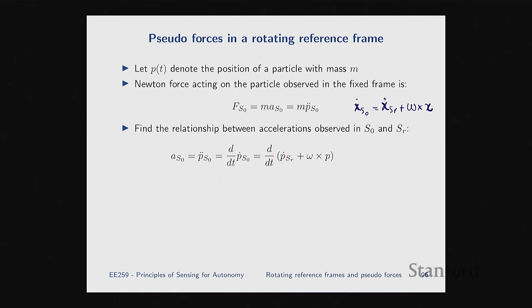Starting with differentiating p-dot in S_R: differentiating p-dot in S_R gives p double-dot in S_R plus omega cross p-dot in S_R. So these first two terms are just our mathematical framework applied to p-dot in S_R.